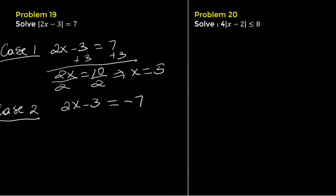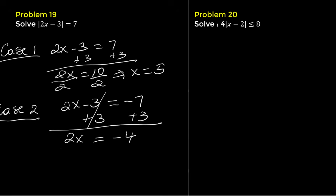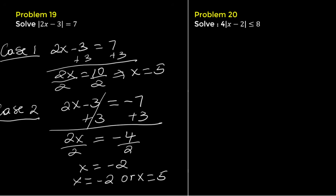Now solve case 2. Add 3 to both sides: 2x equals negative 4. Divide both sides by 2: x equals negative 2. The solution is x equals 5 or x equals negative 2.